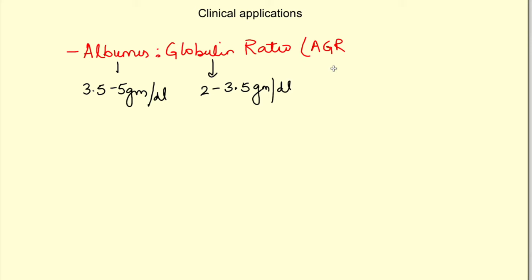Let us see some clinical applications. First is albumin-globulin ratio. Normal albumin concentration is 3.5 to 5 grams per deciliter while globulin concentration is 2 to 3.5 grams per deciliter. So if we take a ratio of their concentration, it comes to 1.5 to 2.5 is to 1. Since except gamma globulin, rest are synthesized in liver, synthesis of albumin will decrease in liver disease causing a decrease in this ratio. There are many other diseases also which can affect this ratio.